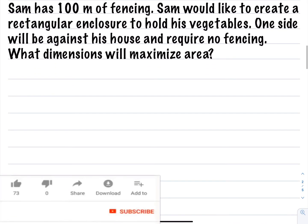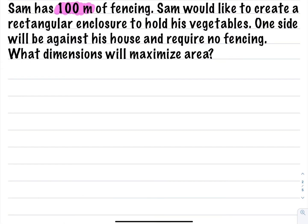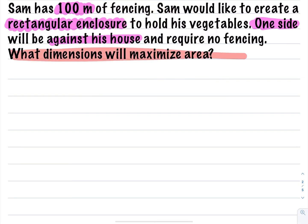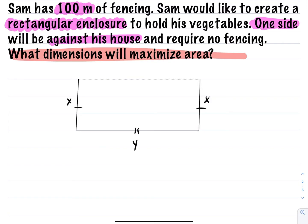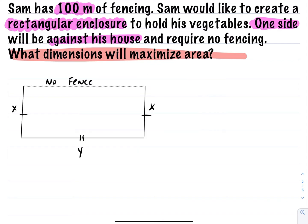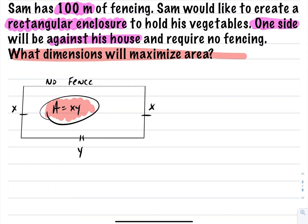Let's look at the next example. This is a slight adjustment — Sam again has 100 meters of fencing and wants to create a rectangular enclosure, but this time one side is against the house, so no fencing is needed on that side. We label the two parallel sides x and the one remaining open side y. The question is: what dimensions give maximum area?